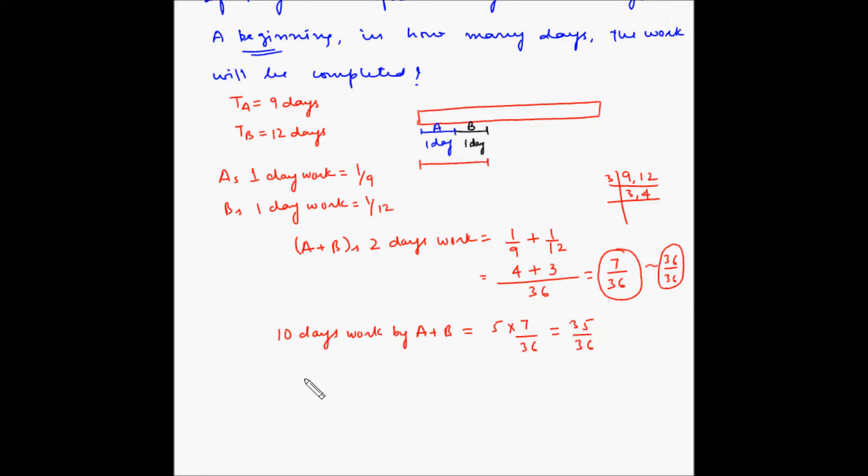Now the remaining work is equal to 1/36. Since 10 is an even number, that means on the 10th day, B has done the work. So the next turn is for A.